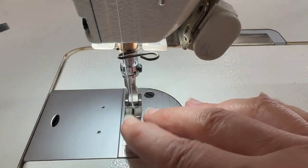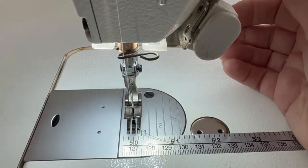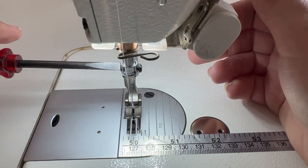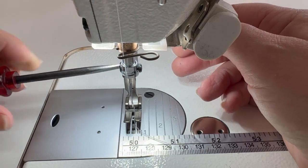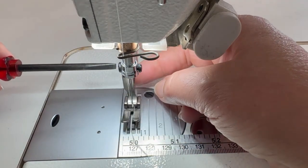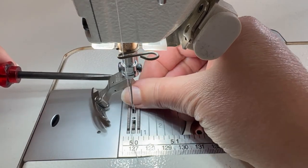The first thing you need to do is remove the foot from your machine, so raise the presser foot and then unscrew it. You might find with a domestic that it clips on, but with industrials you'll find that they need to be unscrewed, and it'll drop down once it's free, and then you can remove it.